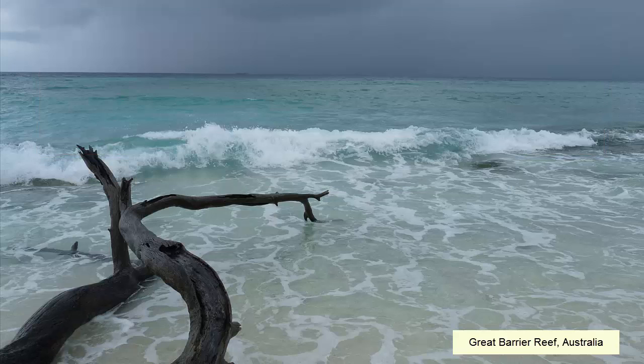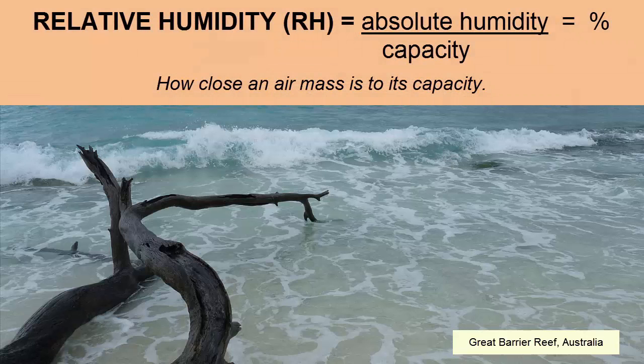Air over the Great Barrier Reef of Australia is quite warm, so its capacity is high. Relative humidity, or Rh, is a measurement of how close an air mass's water concentration is to its maximum — Rh is a percentage. It is the most useful measurement when discussing weather systems because it tells us how much more water could be evaporated or how close it is to raining.